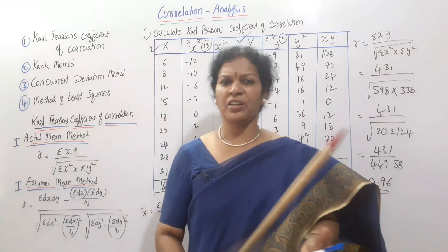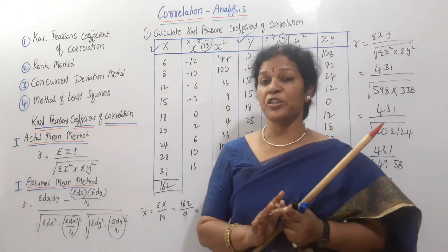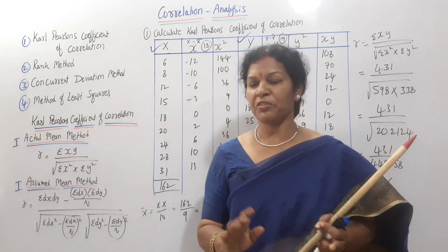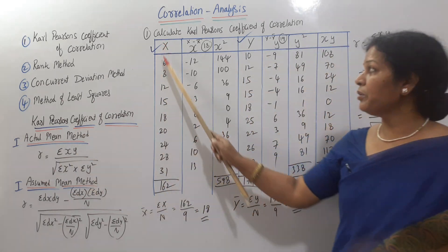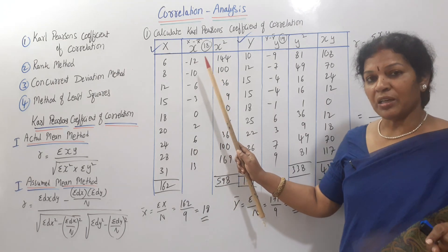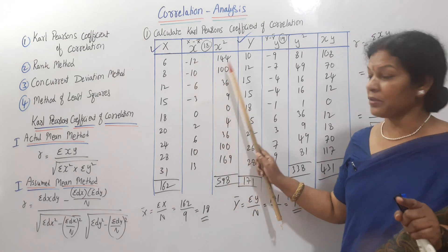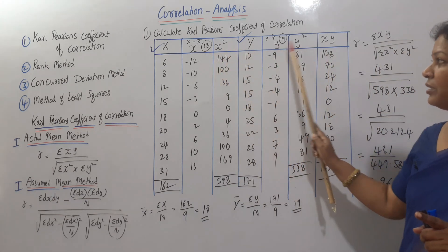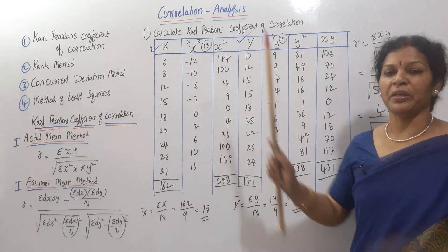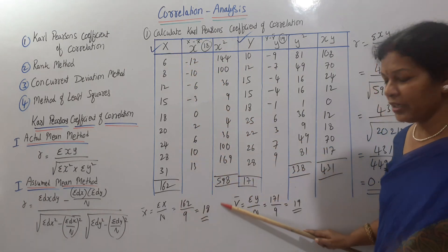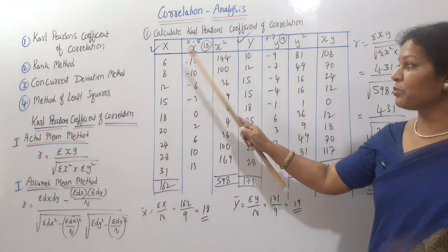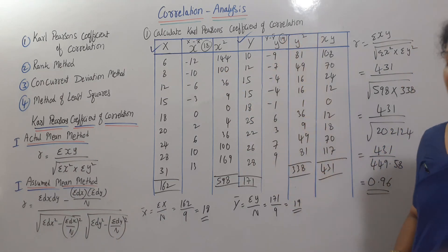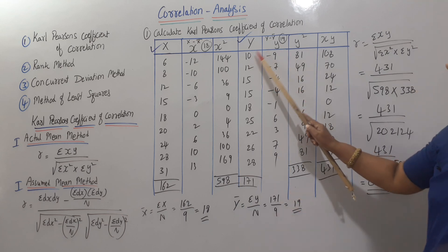The problem is very simple. For Carl Pearson's Coefficient of Correlation using the actual mean method, we prepare the following columns: X, small x (x minus x-bar), x squared, Y, small y (y minus y-bar), y squared, and xy. We compute x-bar as 18 and y-bar as 19, then fill in the table and apply the formula.